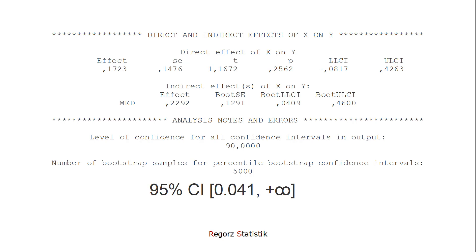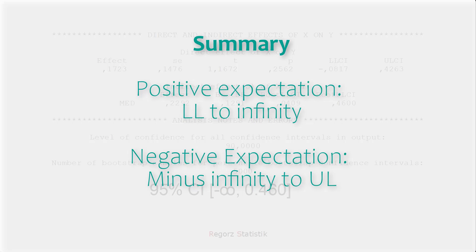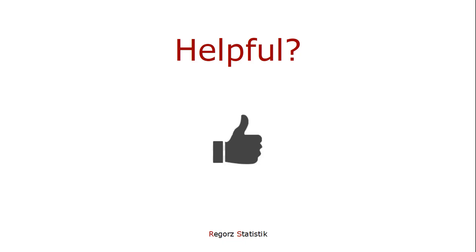However, if our hypothesis had been that we have a negative indirect effect, then we would take the upper limit of the 90% confidence interval and put the lower limit to minus infinity. So: positive expected effect — take the lower limit to infinity; negative expected effect — take minus infinity to the upper limit.